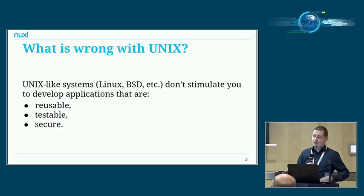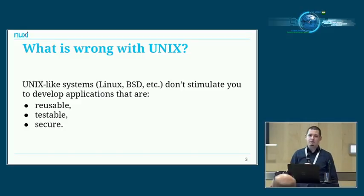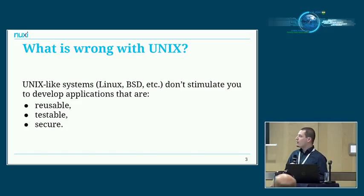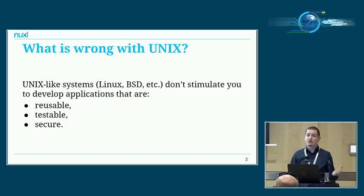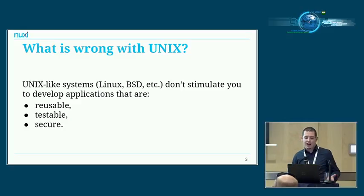Before I explain what Cloud ABI is, I want to mention what I think is wrong with UNIX-like operating systems. I've been using them for about 14 years now and I've used them quite a lot to develop my own applications. After some time you really start noticing things that are wrong in the design. Just looking at UNIX-like systems in general — Linux, BSD, Solaris — they all suffer from the same problems. In my opinion, they don't really stimulate you to design applications that are reusable, testable, and secure.